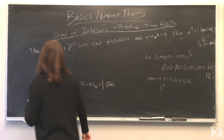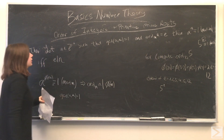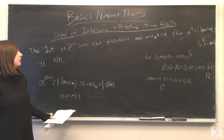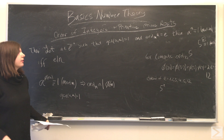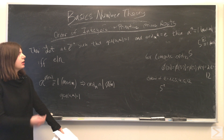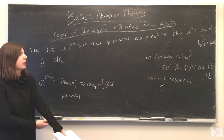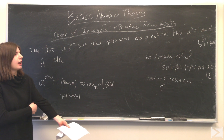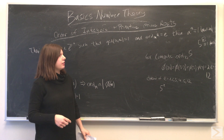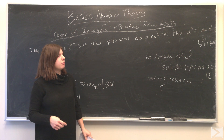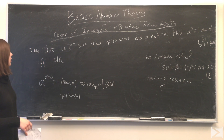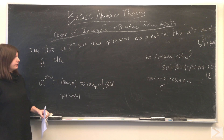Another theorem: let a be a positive integer such that the greatest common divisor of a and m is equal to 1. Then the order of a modulo m is equal to e. Then a to the n is congruent to 1 modulo m if and only if e divides n.